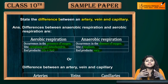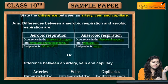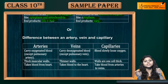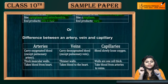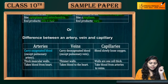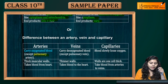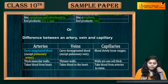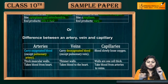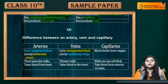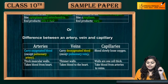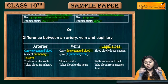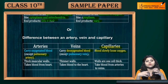So the products vary in anaerobic respiration. Now coming to the differences between arteries, veins, and capillaries. Arteries carry oxygenated blood, except the pulmonary artery, which carries deoxygenated blood. Veins carry deoxygenated blood, except the pulmonary vein, which carries oxygenated blood. And capillaries slowly lose oxygen.